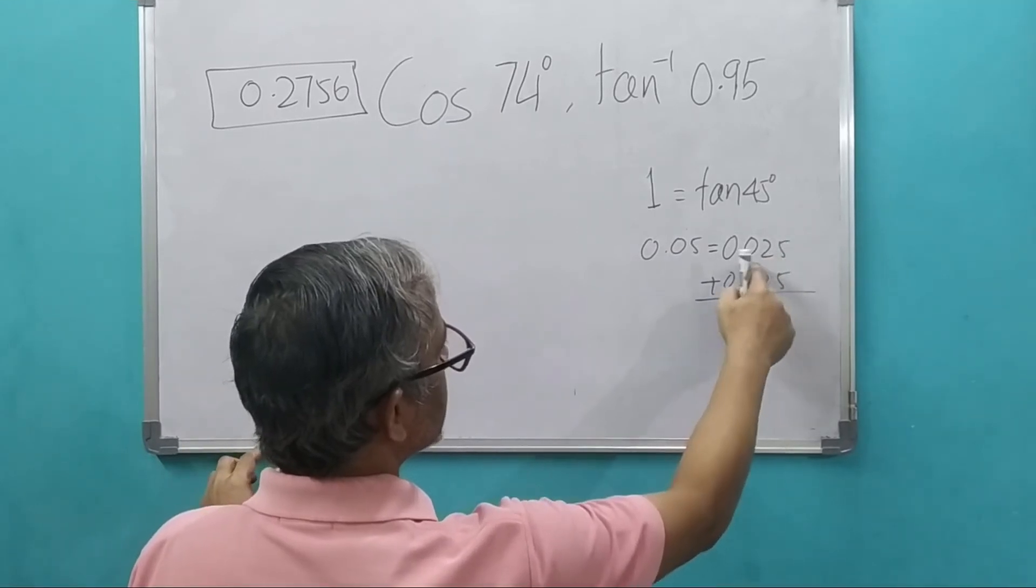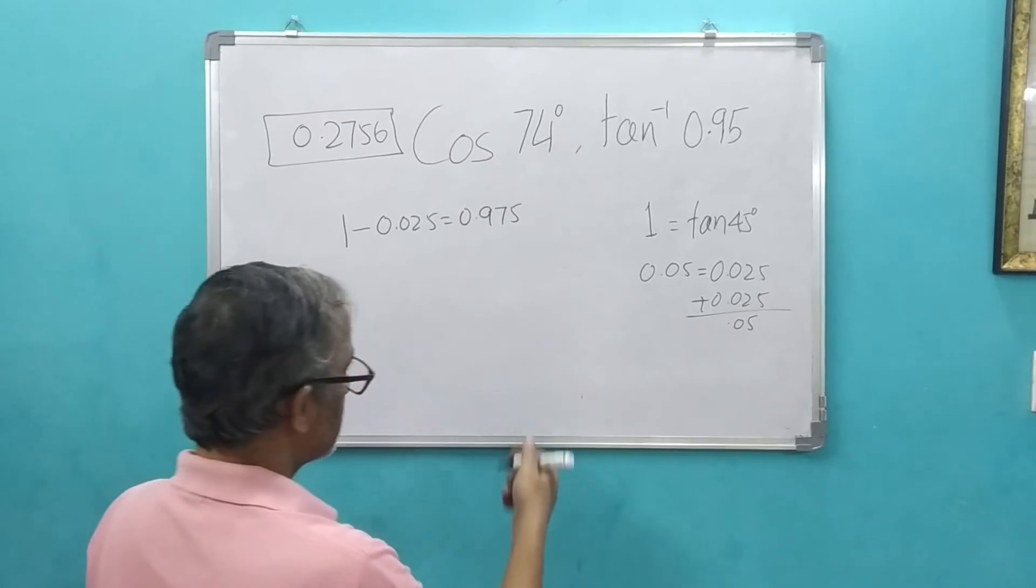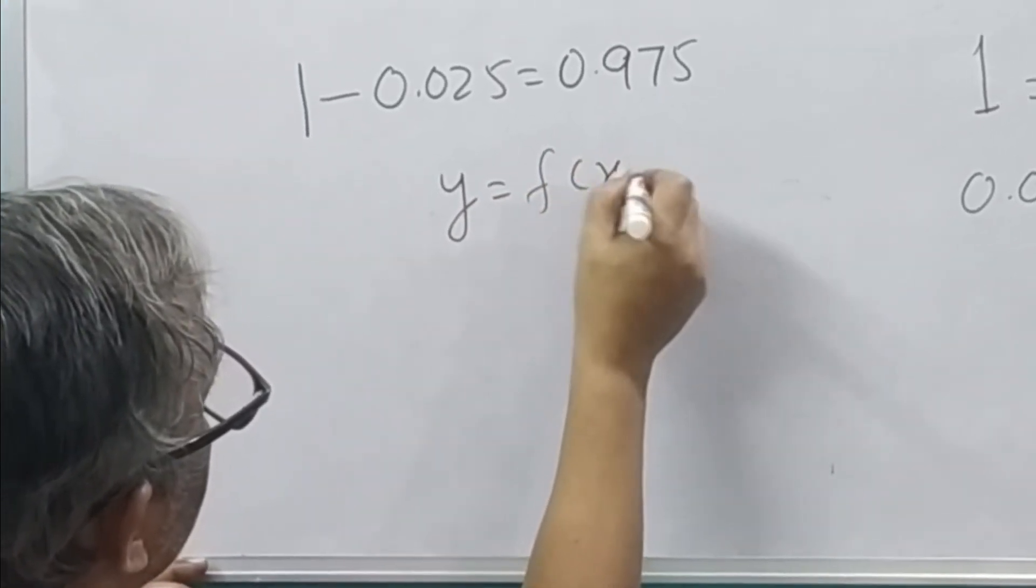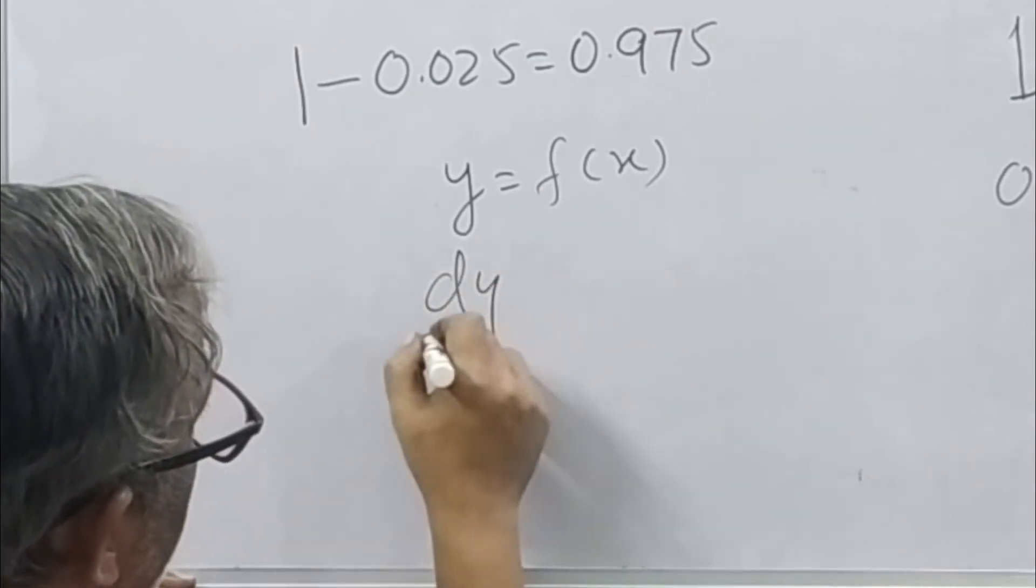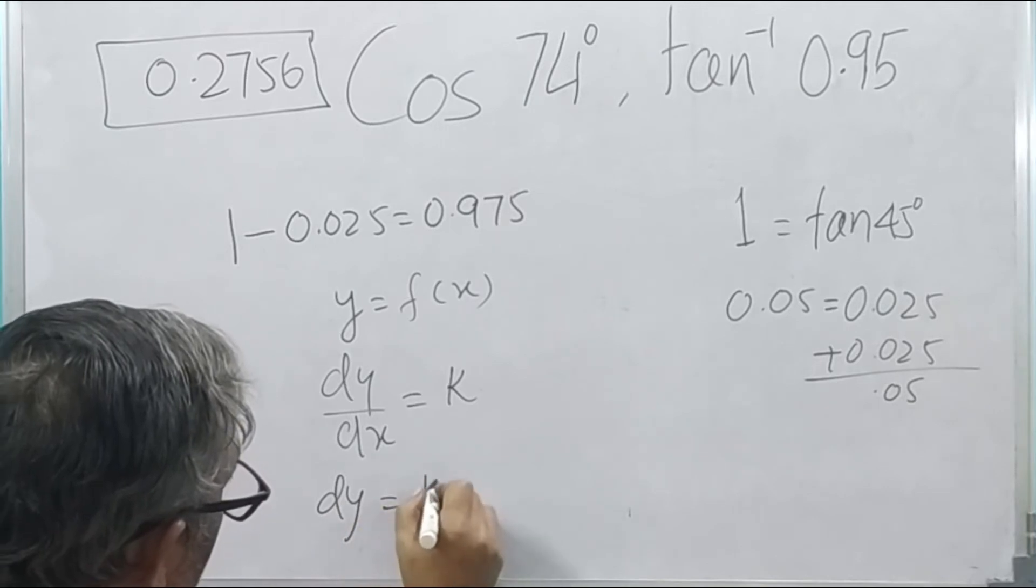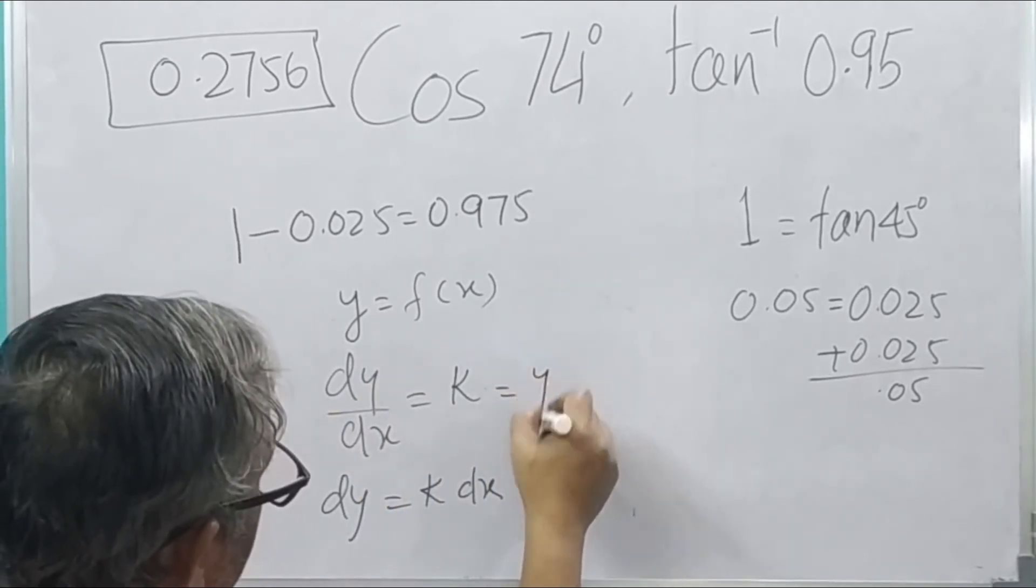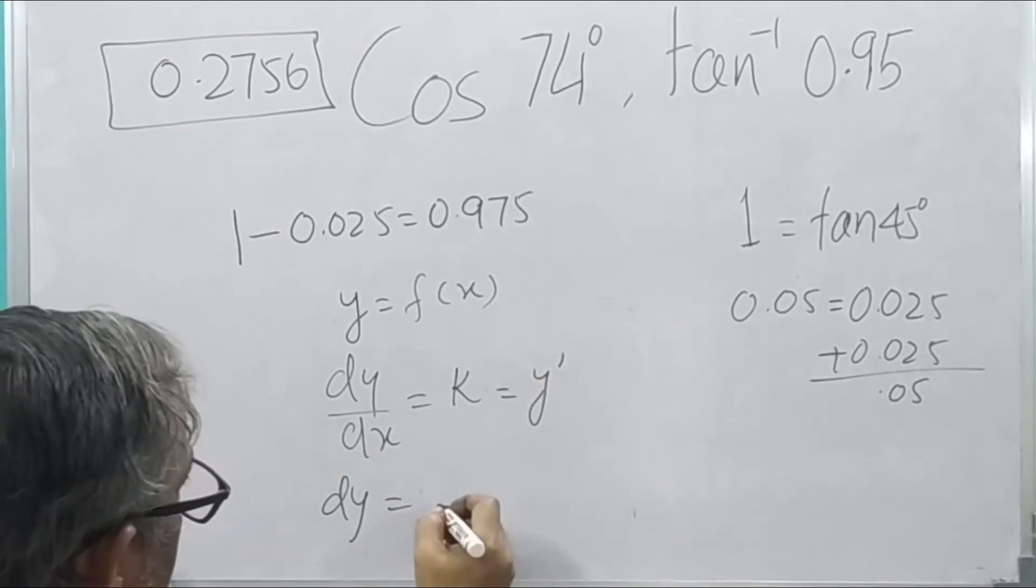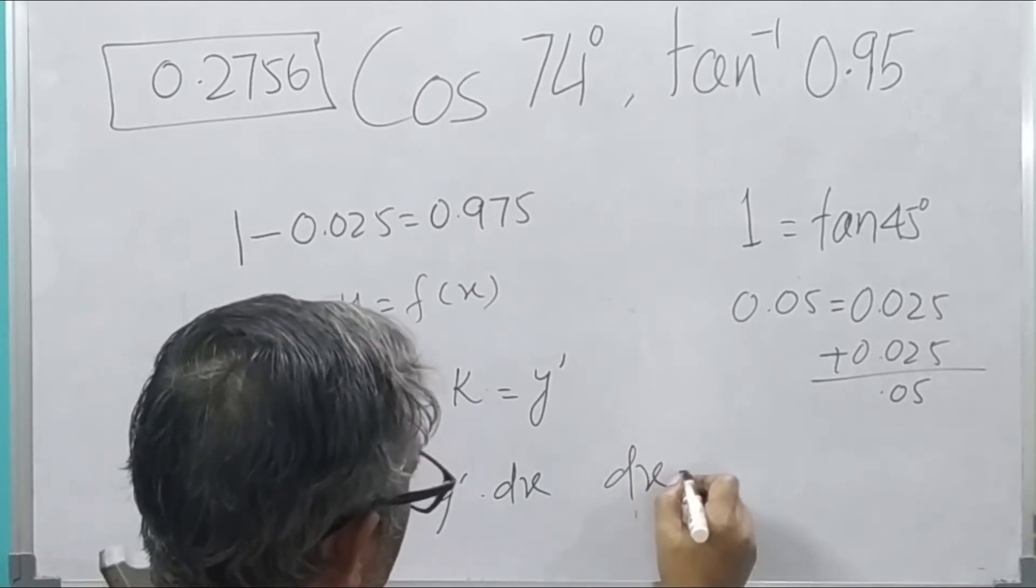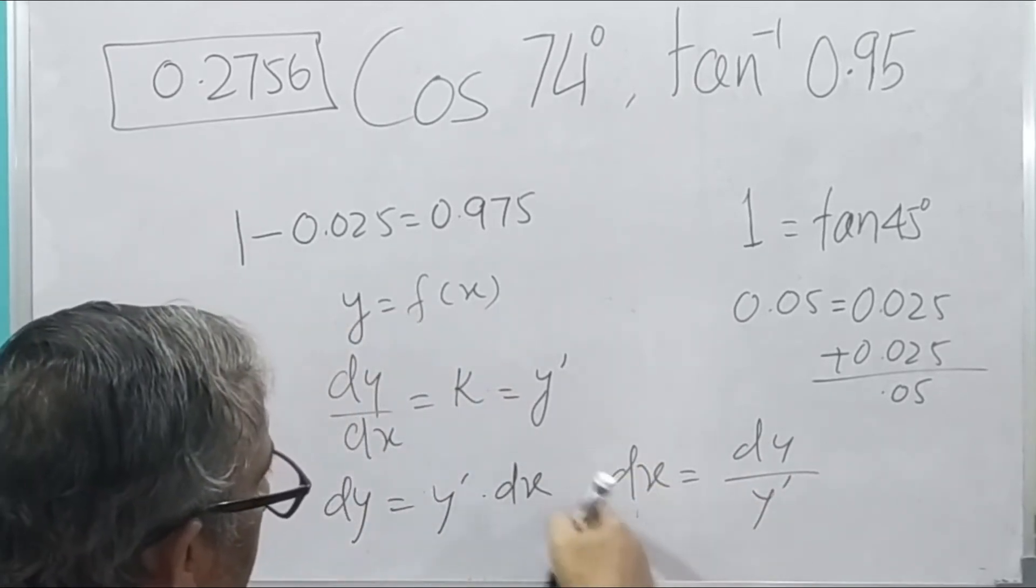Now we will take the difference of 0.025 first. That means, next would be 0.975. Let me explain to you one thing that is, let us say, y is a function of x. That means, dy by dx is equal to say something. dy is equal to k dx. So dy becomes y prime into dx. Now, what will be dx? dx will be equal to dy upon the y prime or the rate of change of y. This formula is to be put here.